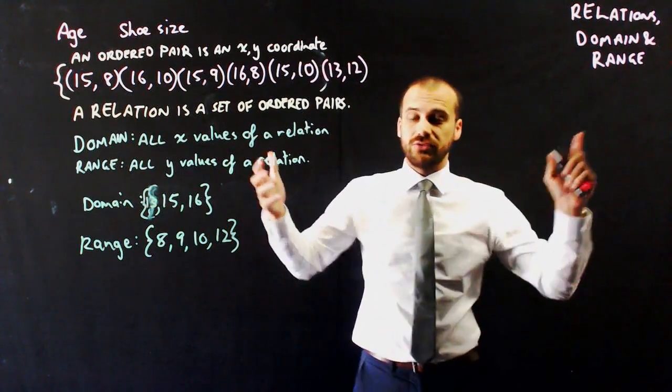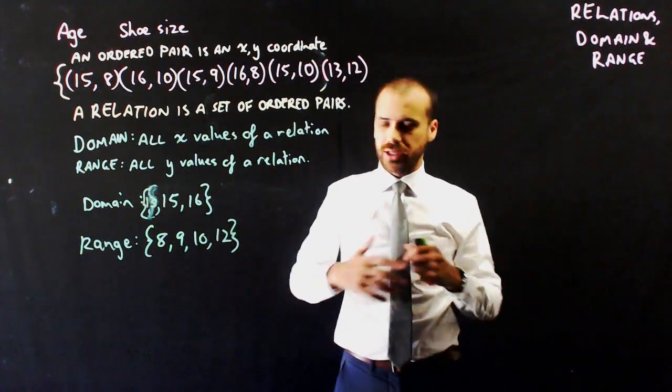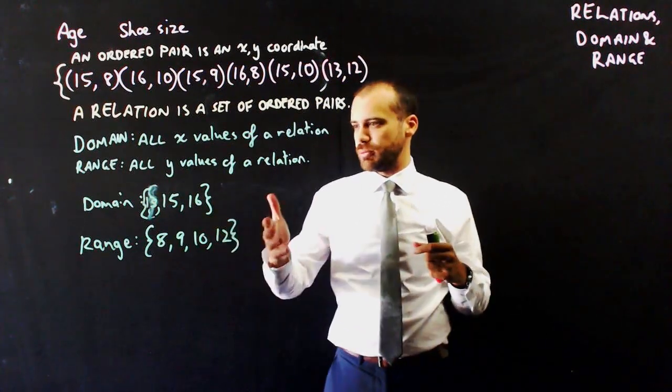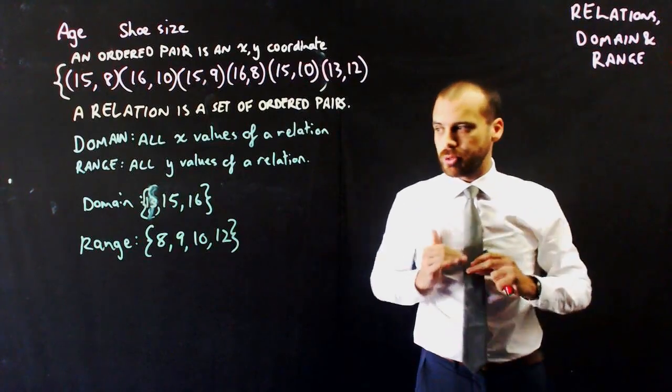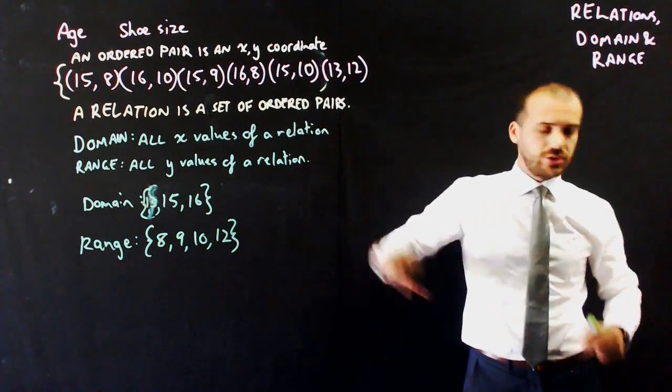If someone had enormous feet, or was incredibly old, like Yoda, could be like a thousand years old, or whatever it might be, we have a thousand in there. So domain and range, all the possible x values, and all the possible y values. Don't get the two confused.